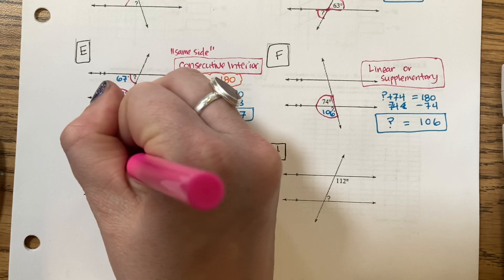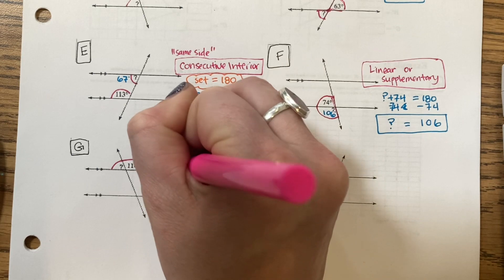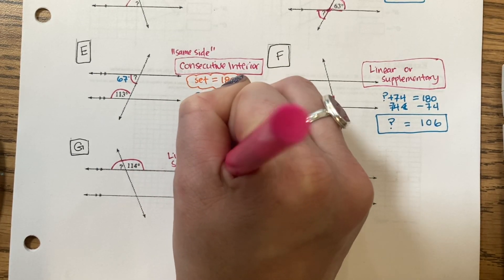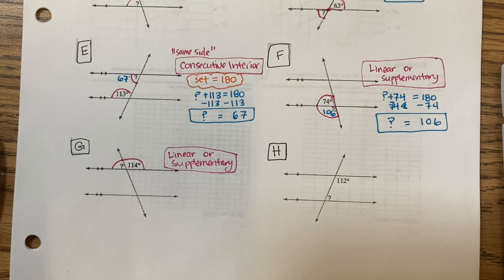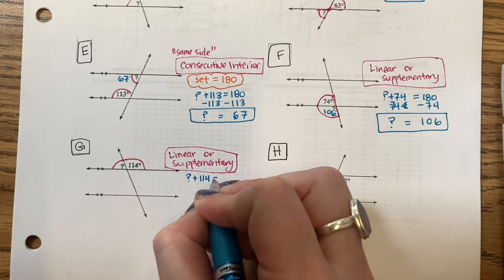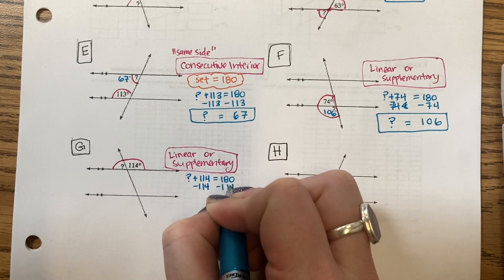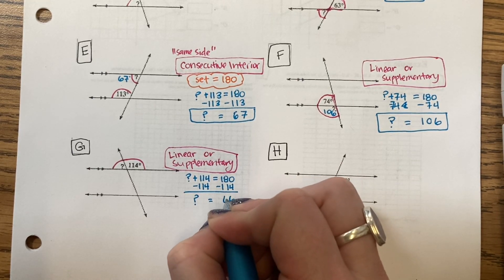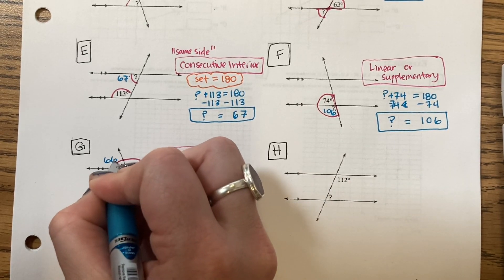Question G. I'm given the question mark and the angle. This is also linear or supplementary. They'll add up to 180. Subtract the 114. That's 66 degrees.